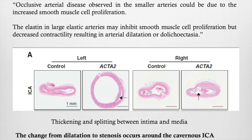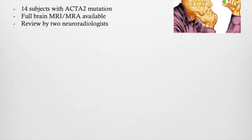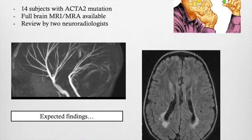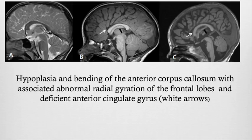You can see how thickened the arteries are in ACTA2 mutation in comparison to controls. Regarding the brain, we studied 14 subjects with ACTA2 mutations two years ago. Apart from the expected findings of arterial straightening and long-standing associated ischemic damage, we also found unexpected brain findings. Hypoplasia and bending of the anterior corpus callosum was seen, associated with abnormal radial gyration in the frontal lobe and deficient anterior cingulate gyrus, which you would not expect in patients with normally developed corpus callosum embryologically.